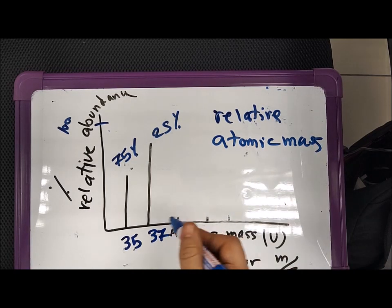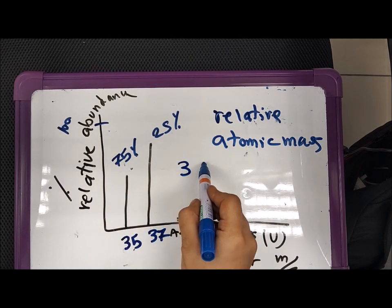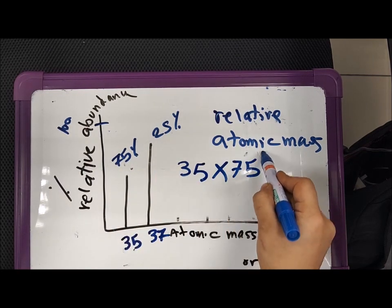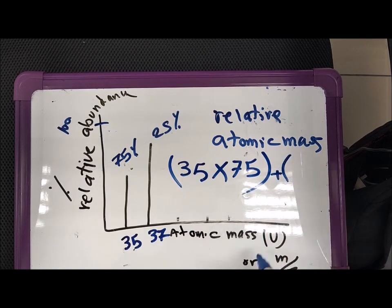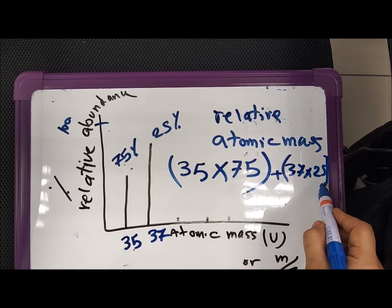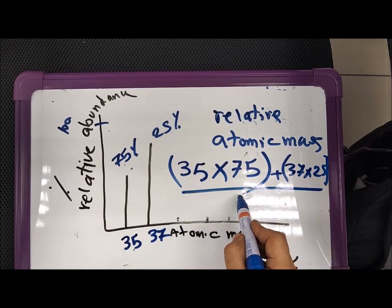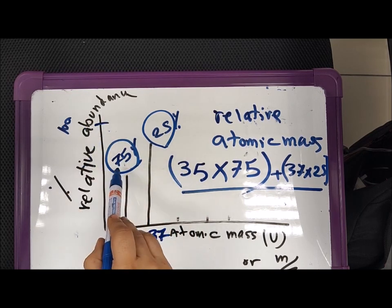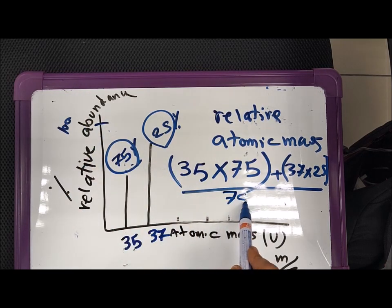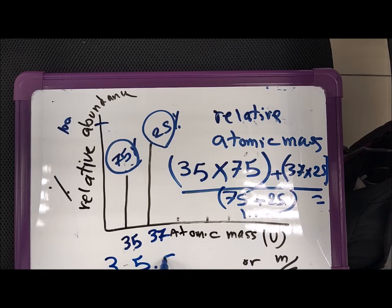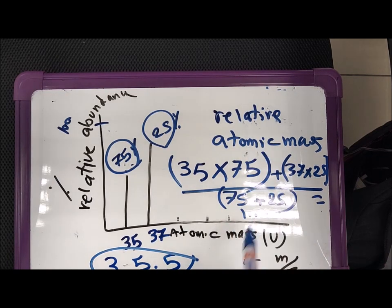So what we can do here is, 35 should be multiplied by 75, which is its abundance, and then plus the other one, 37 times 25. Once you calculate this, it will be divided by the sum of the abundance, the total abundance, which is 75 plus 25, which in this case is 100. So the overall answer for this is 35.5, so this is the relative atomic mass.